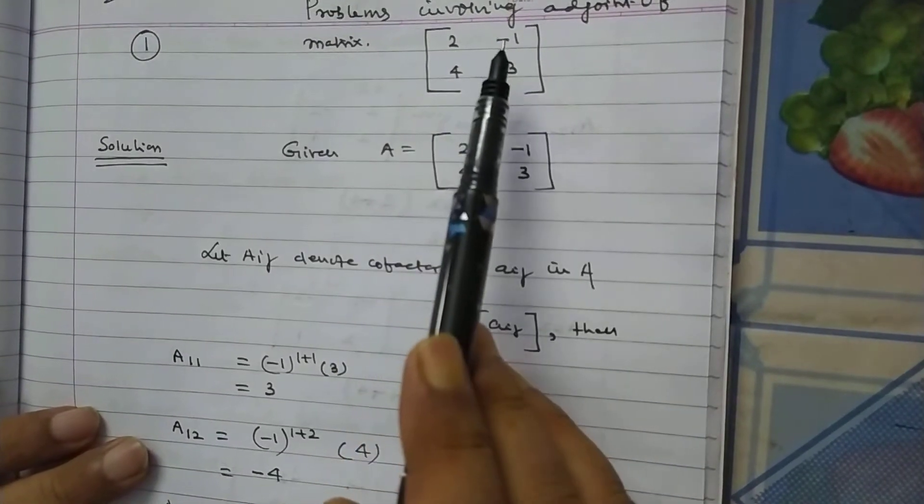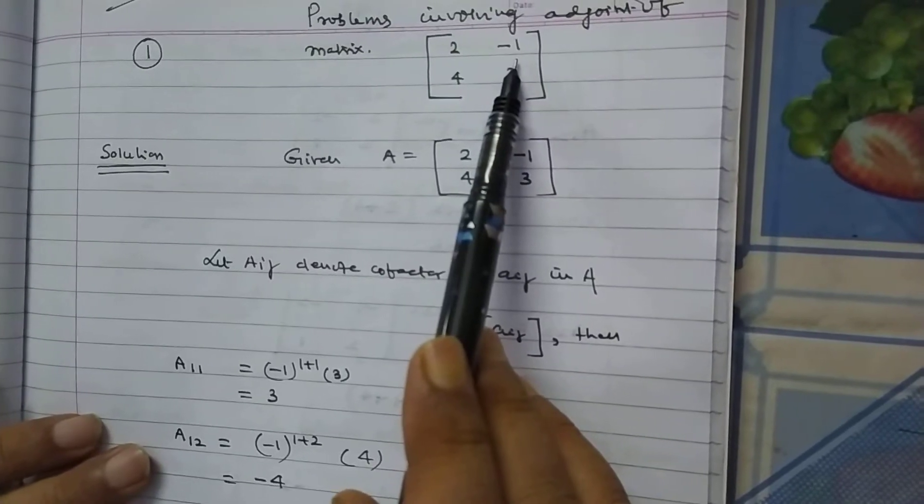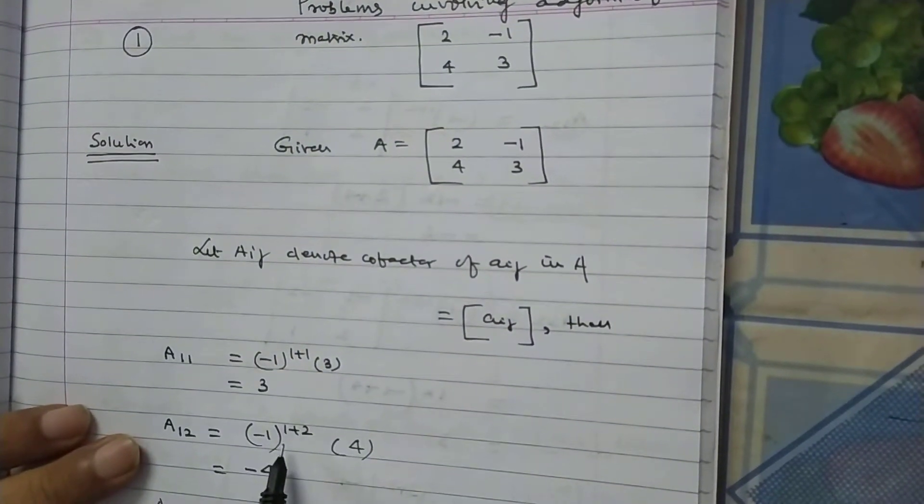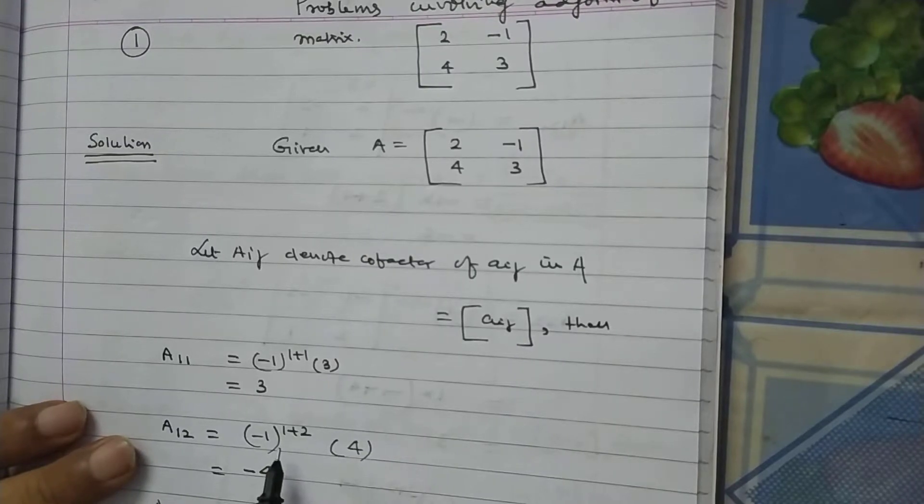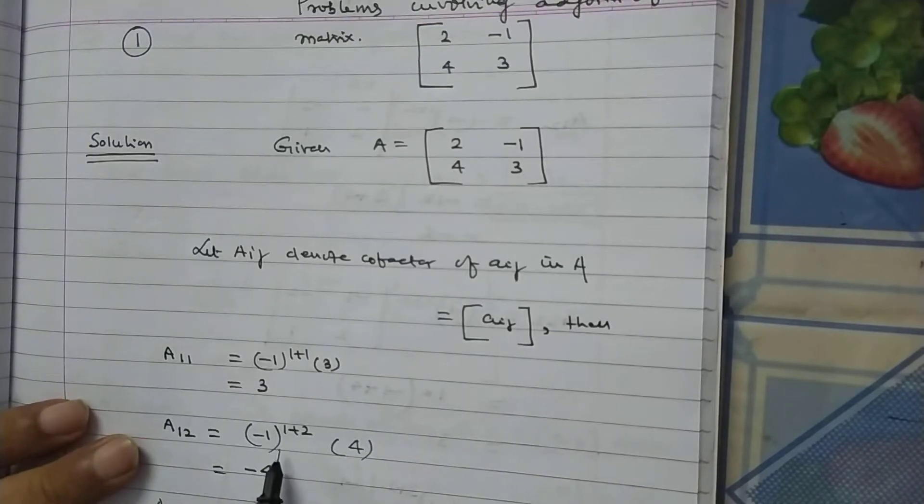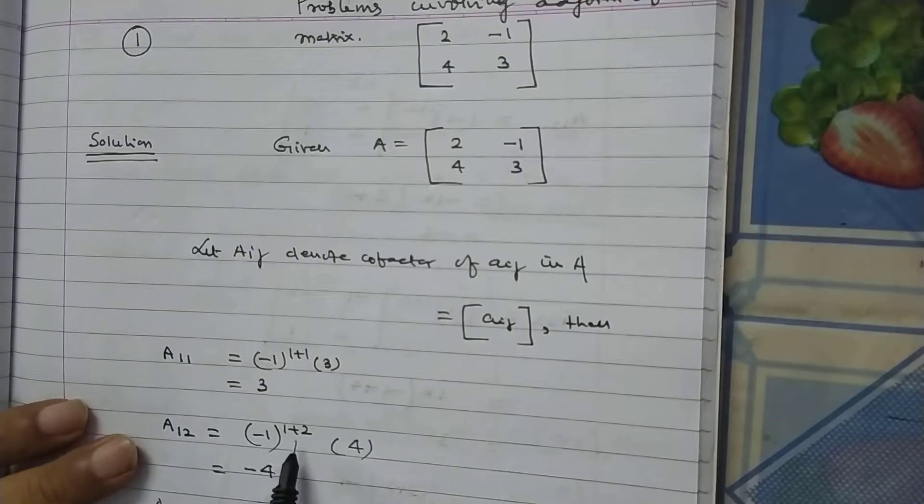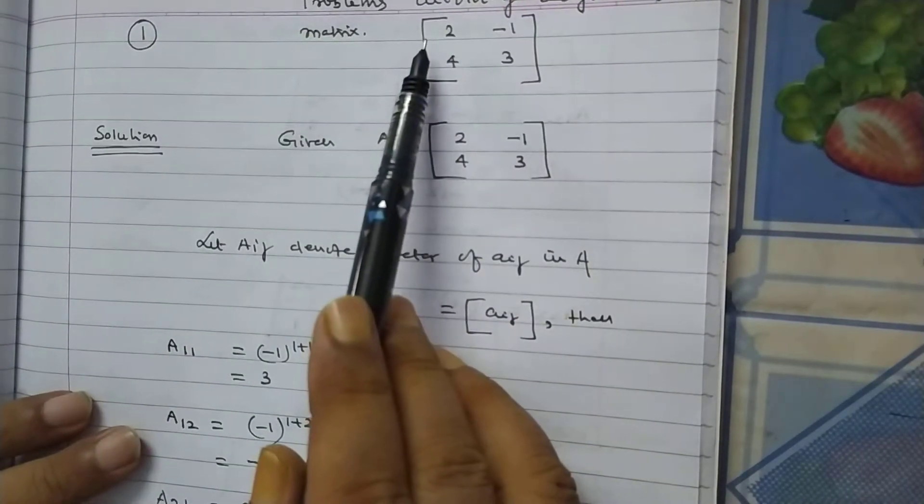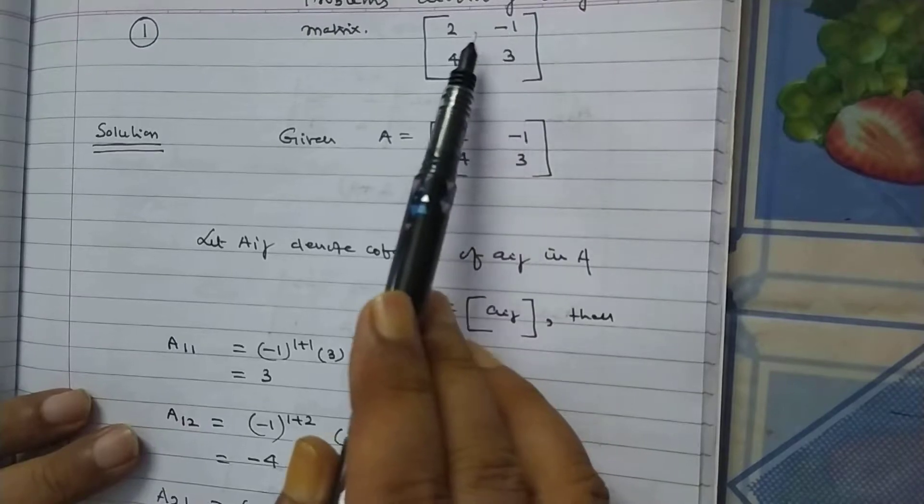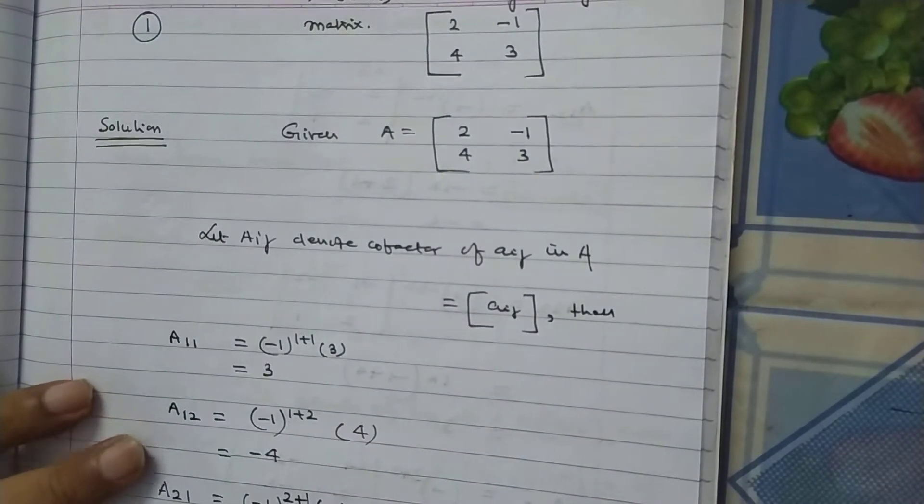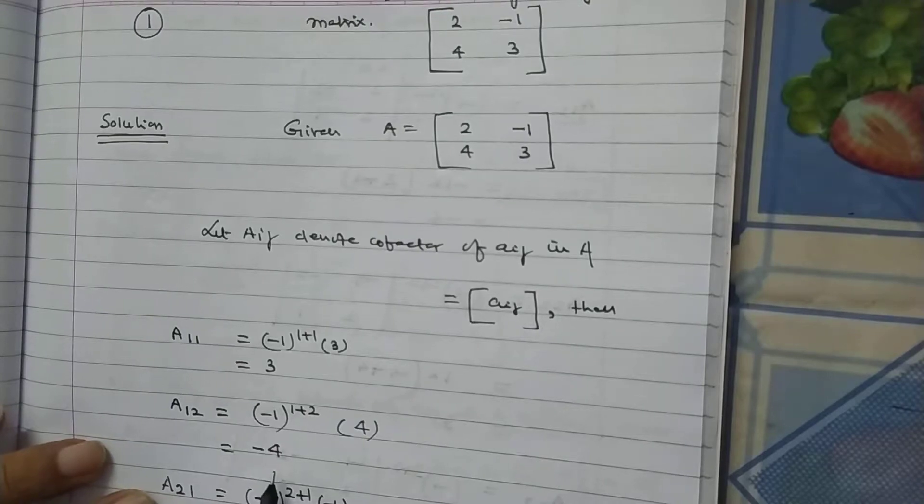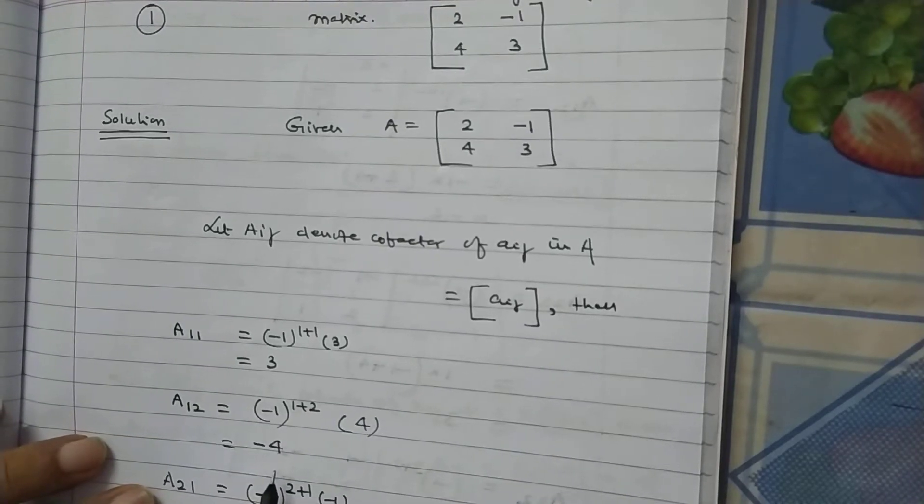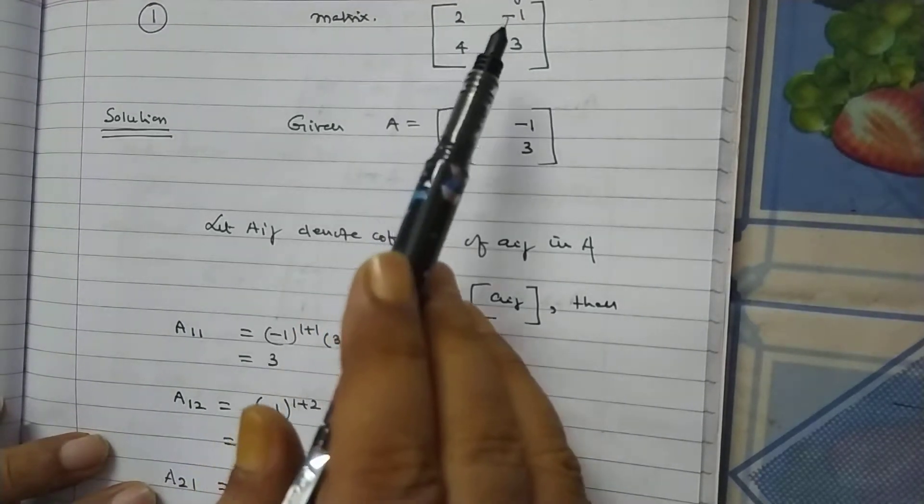Similarly, the cofactor of minus 1 is, minus 1 is at first row and second column. So, power will be minus 1 to the power 1 plus 2 and the remaining elements, after deleting the elements of first row and second column, we have 4. So, we will multiply it by 4. So, minus 4 is the cofactor of minus 1.